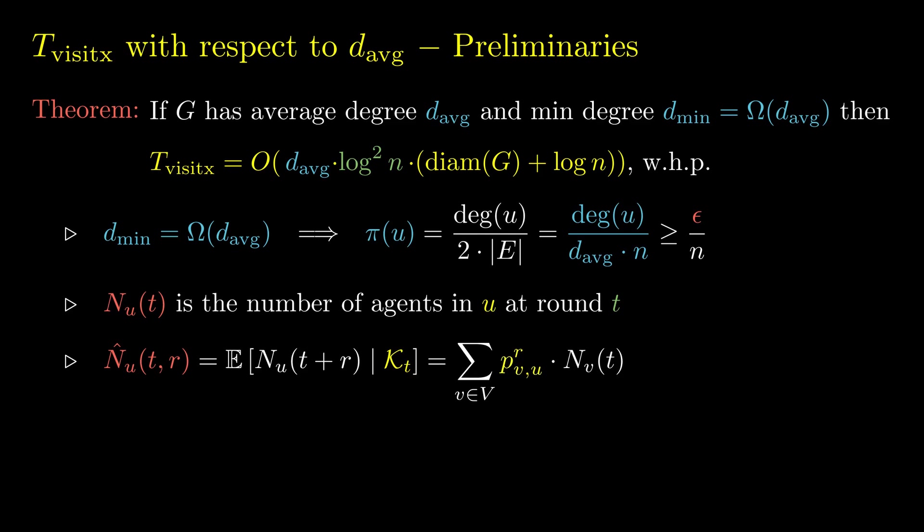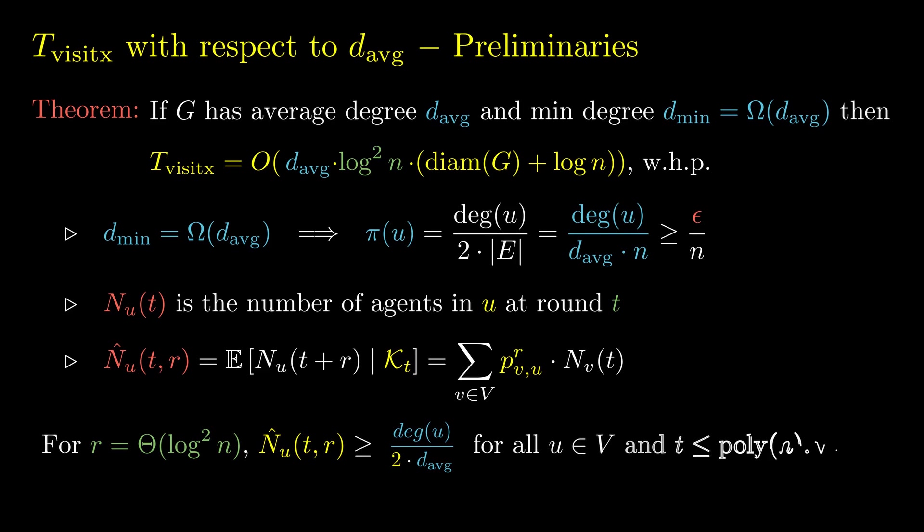We take the sum over all vertices v of the expected number of agents that visit u at round t plus r, having been at v at round t. With this definition, we show that for r equal to log squared n, n-hat_u is at least the degree of u divided by twice the average degree of the graph, for all vertices u and all rounds we need to consider. This guarantees that given any execution up to round t, if we wait r more rounds, we have a lower bound on the number of agents visiting u. We can use these agents to inform the neighbor of u if u is already informed. This lower bound holds because in r rounds the agents mix enough for us to use concentration inequalities.